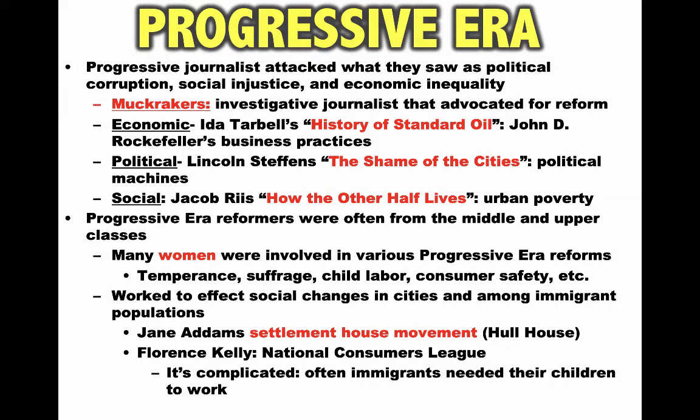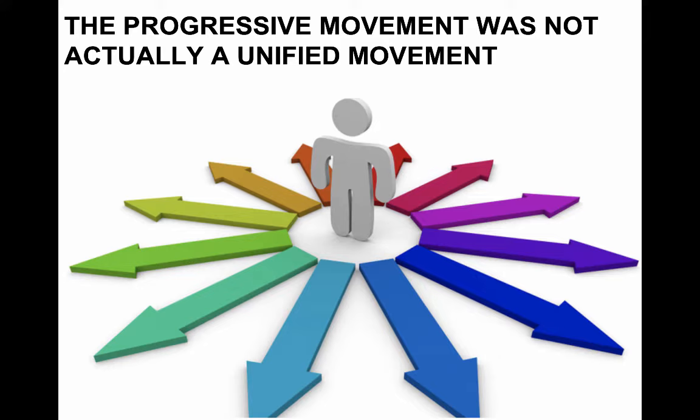Now, the Progressive Movement, as we're going to see, is very complicated. Often immigrants needed their children to work because they made such little money in the factories — they needed the extra income their kids could bring in to survive. So you're going to see lots of contradictions within the Progressive Movement. The Progressives had different opinions about different issues; it was not some unified movement committed to the same goals or reforms.